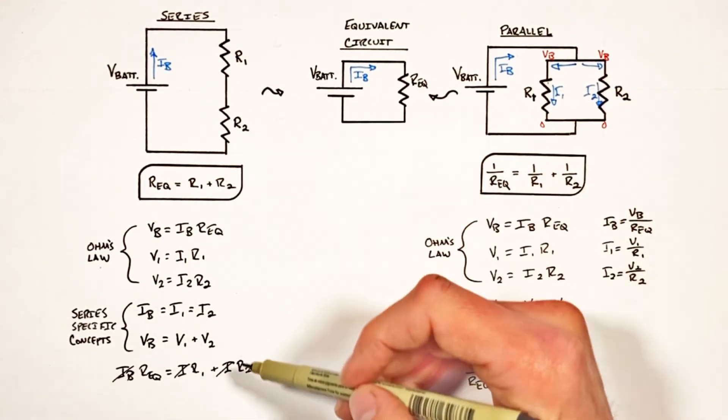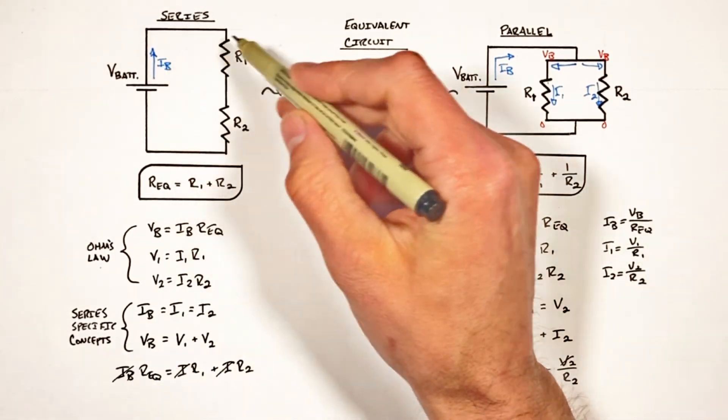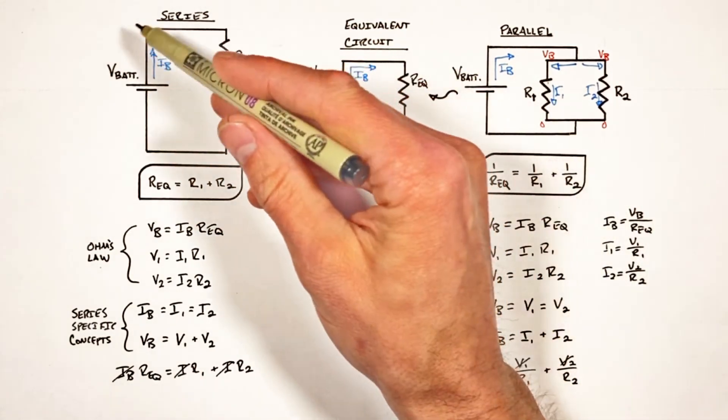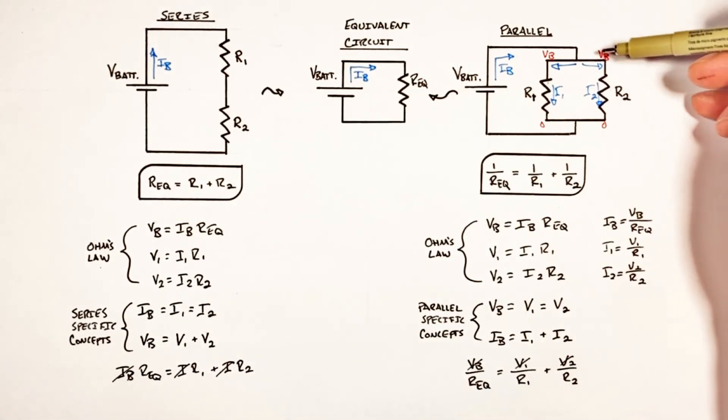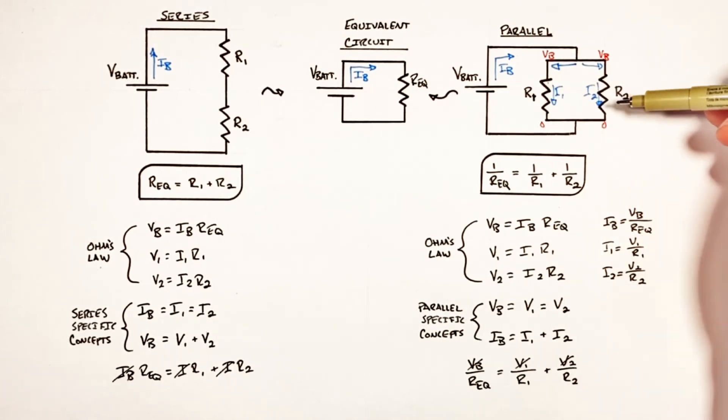So ultimately it's important to remember that when dealing with resistors in series, the current is the same through all components but the voltages ultimately add together to equal your total voltage. Whereas when dealing with resistors in parallel, the voltages across all components are the same but those currents add up to be the total current.